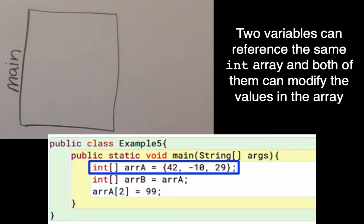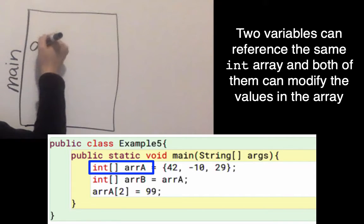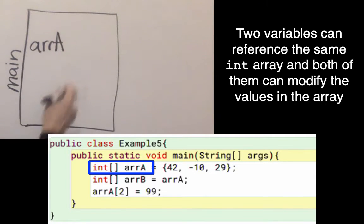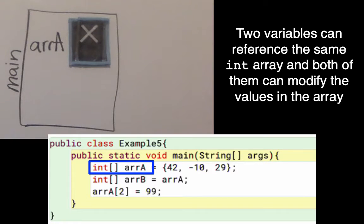My first line of code says int[] arrA gets, and there's a new array there that has three elements in it. The left hand side creates a variable named arrA. That's going to be a variable that can hold a reference to an array.